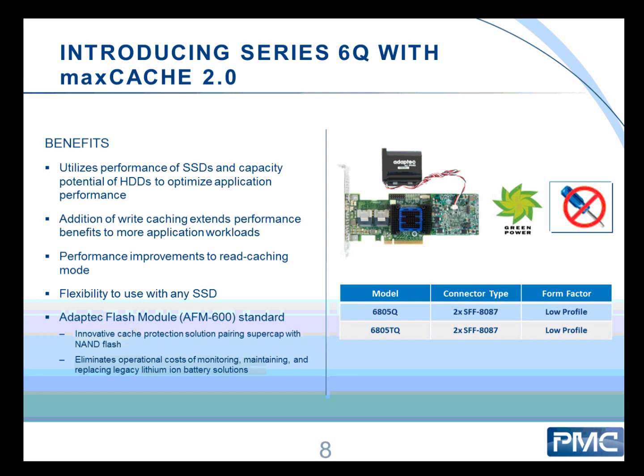These are our 6Q controllers. This can be a little confusing because we enable SSD caching only on controllers that have a Q in the name. So you need to buy the 6Q card, and then you can use any SSD on the market — though we recommend using ones from our compatibility list on the website. We've had very good experience with STEC. The Q is essentially a programming at our factory to enable the caching technology, allowing you to use an SSD as a cache.